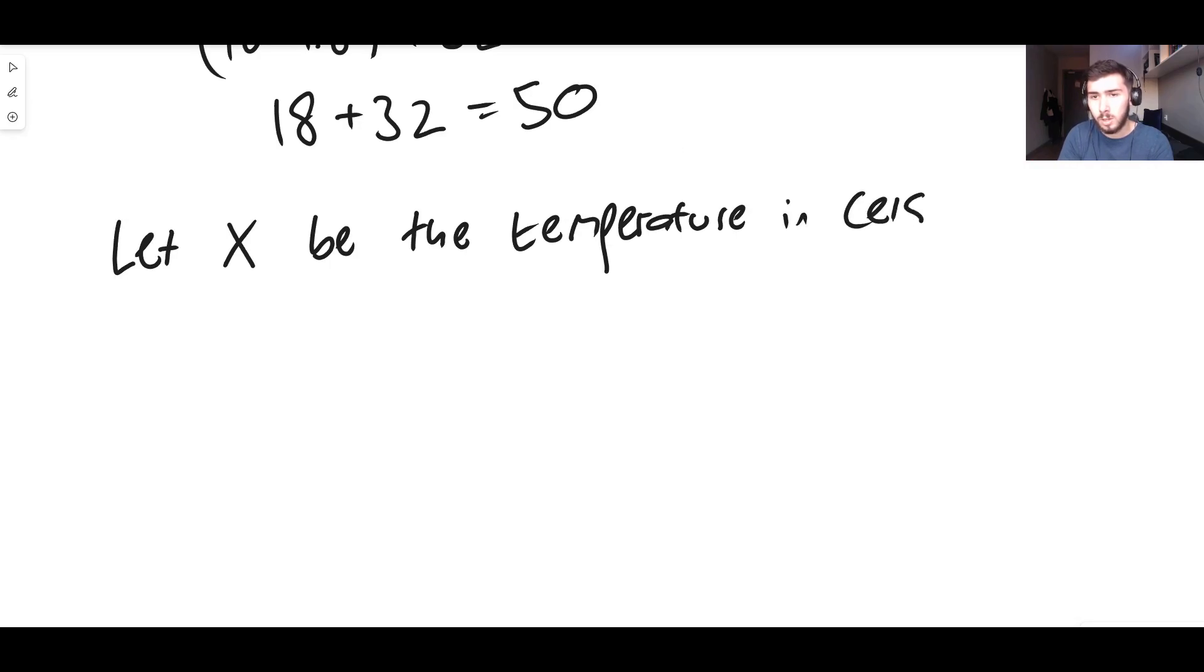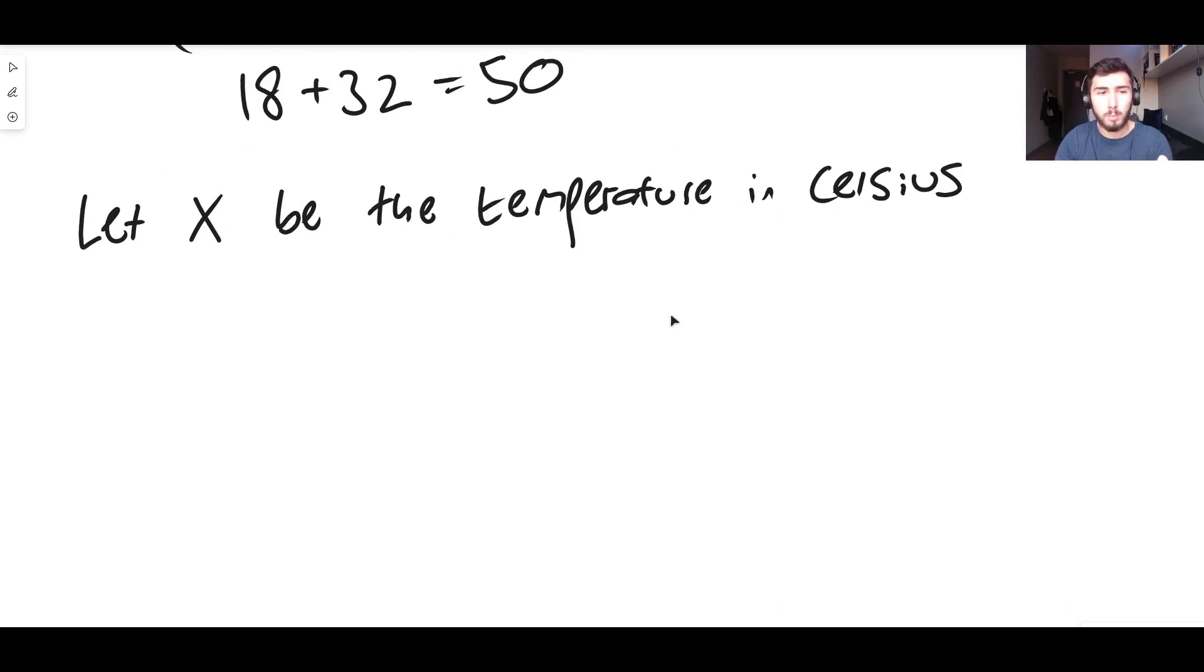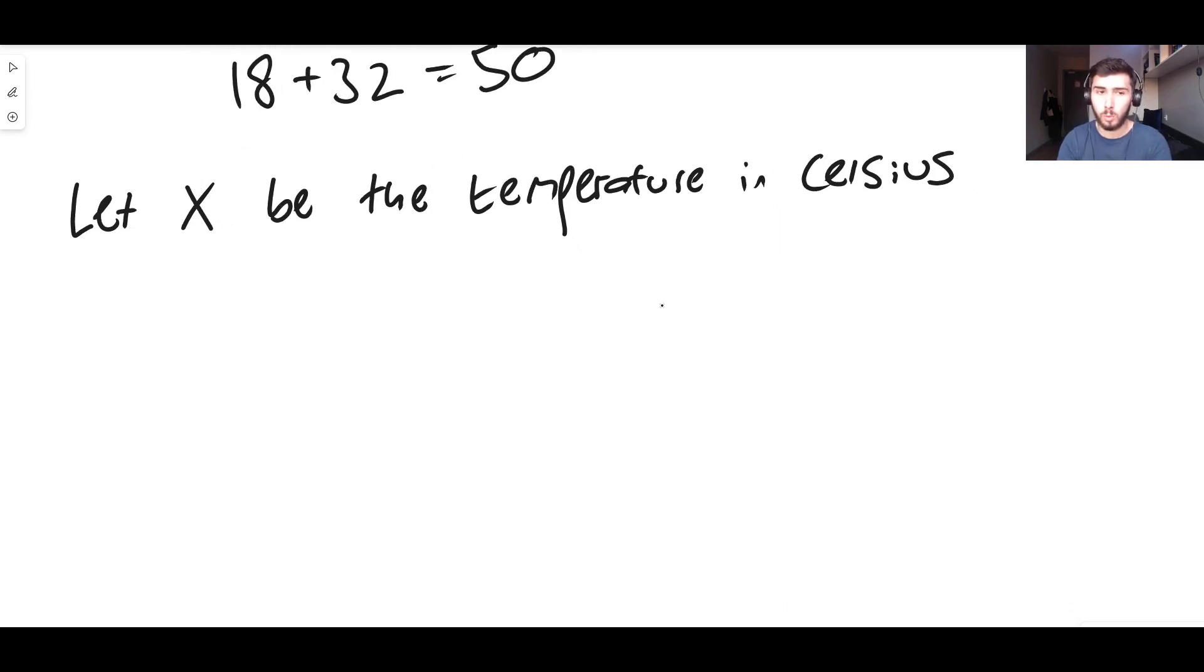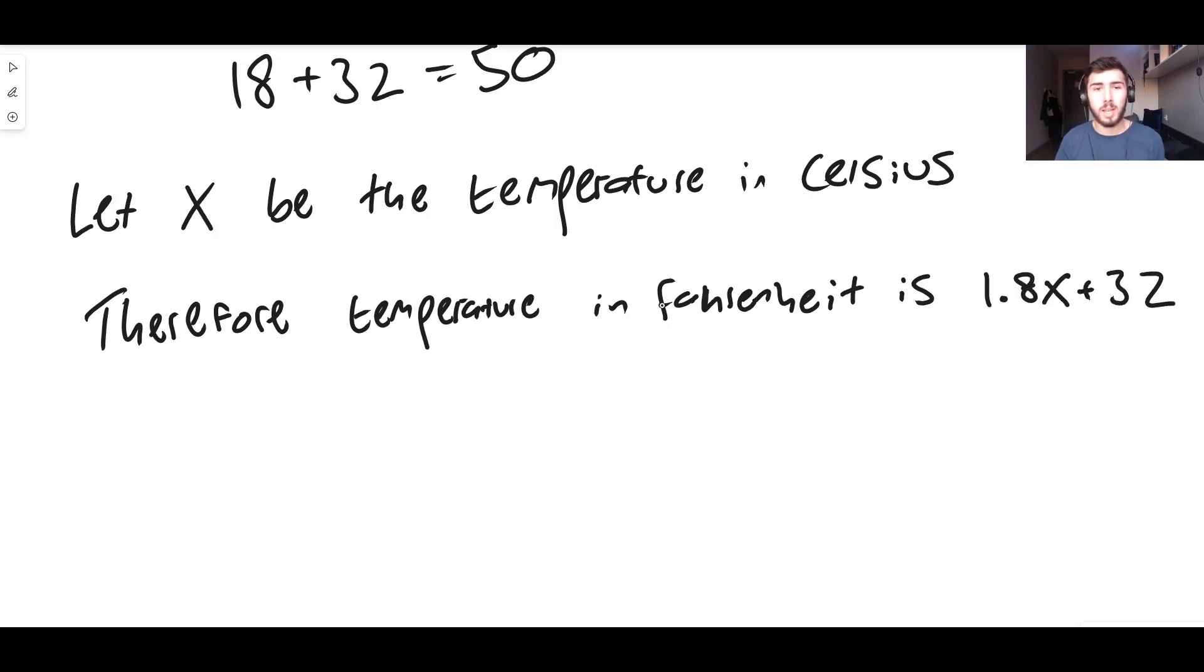If X is the temperature in Celsius, what's the temperature in Fahrenheit? Well, the temperature in Fahrenheit, therefore, is just simply going to be 1.8 multiplied by X plus 32. Because if X is the temperature in Celsius, you just do 1.8 times that temperature in Celsius plus 32—that's the formula.